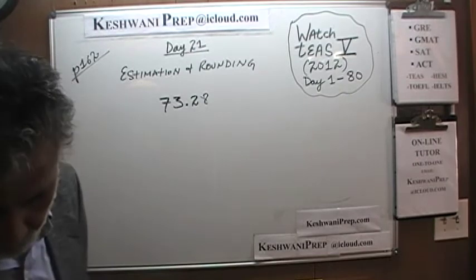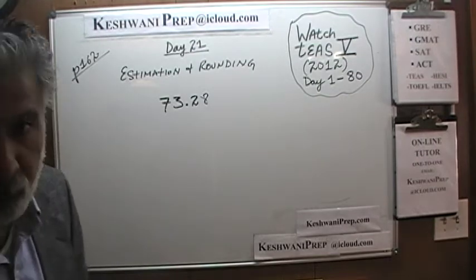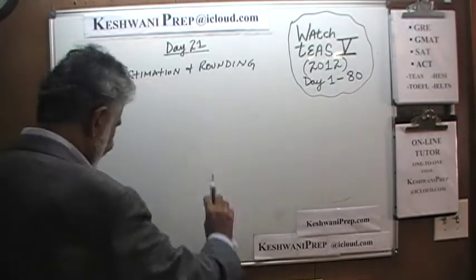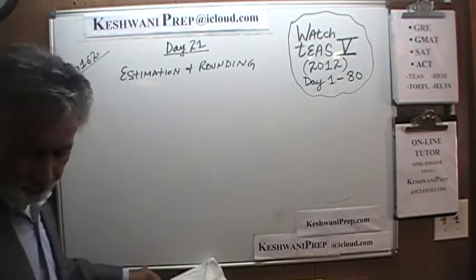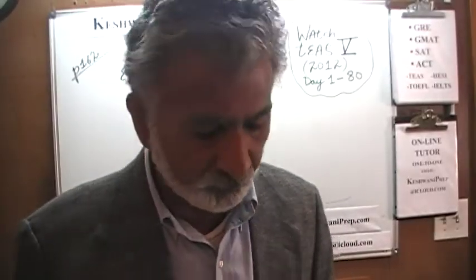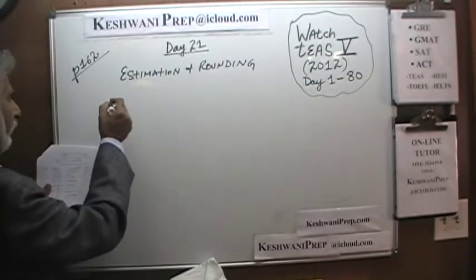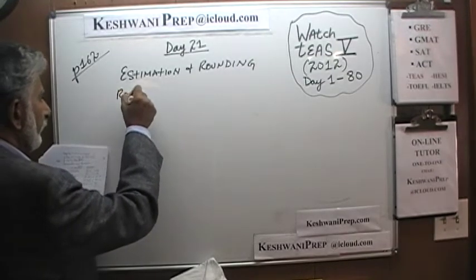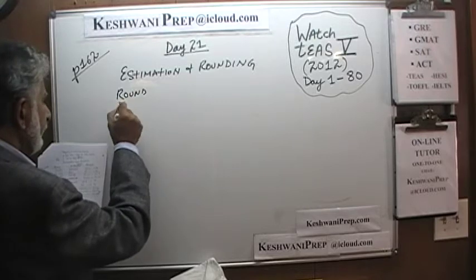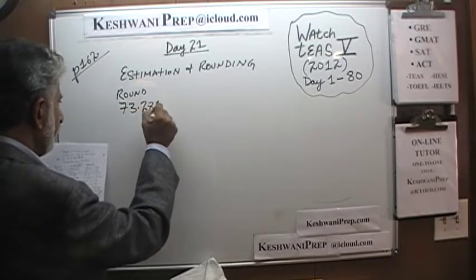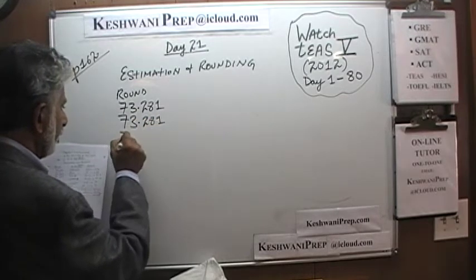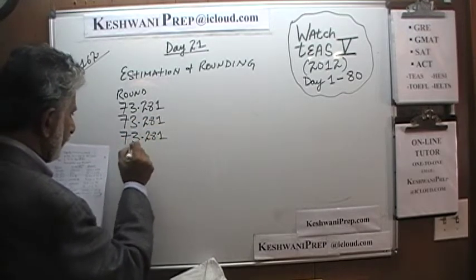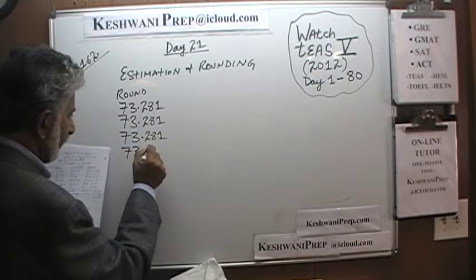This is the quantity given to us in the book at the bottom of page 162. The quantity is 73.281. We are being asked to round this figure to a given digit — whichever digit they tell us. So let's put it down: round 73.281 to the specified place.